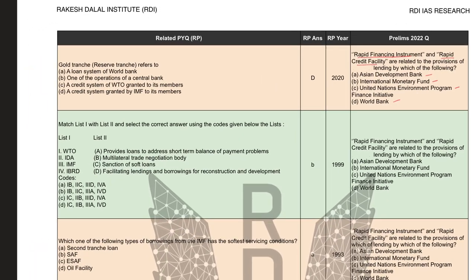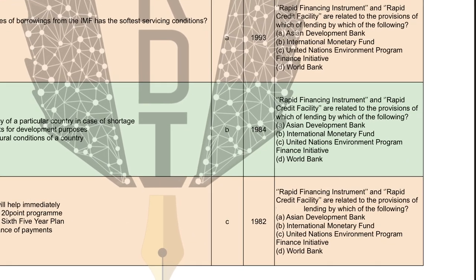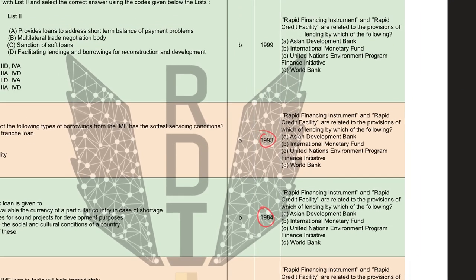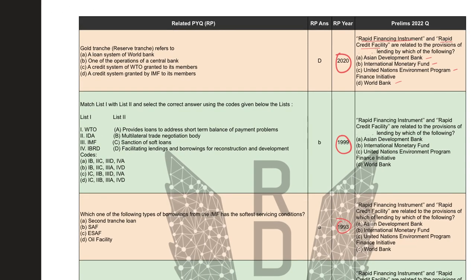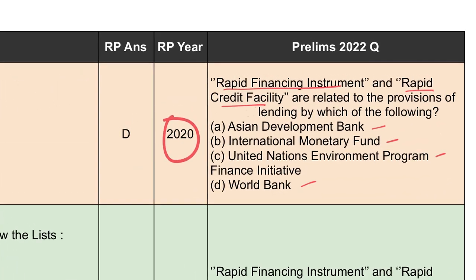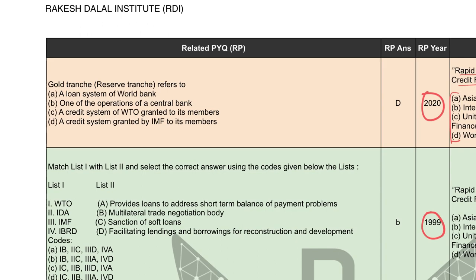Questions regarding lending by big financial institutions have been asked five times in Prelims from 1979 onwards. The first such question was in 1982, then 1984, 1993, 1999, and the latest in 2020. Looking at the nature of these questions, most have been one-statement questions — meaning there is a question statement followed by four options, just like in this 2022 question.